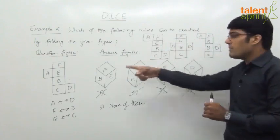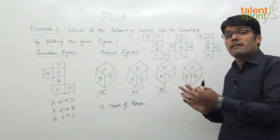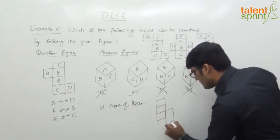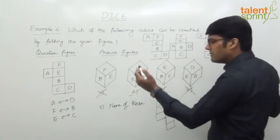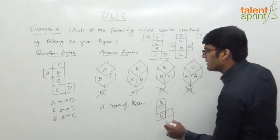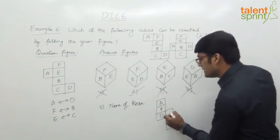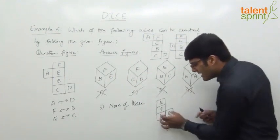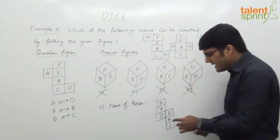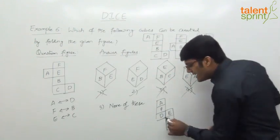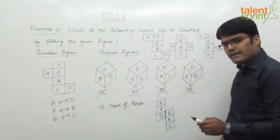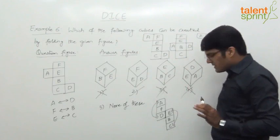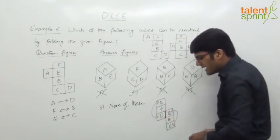There is one more form of the open figure that is slightly different — where there are no extensions. In this form, arranged as A, D in one line and F, B in another with E and C, you cannot use the extension rule. Instead, within each straight line, alternate ones are opposite: A and D are opposite, E and C are opposite. What is left out is F and B — the center of the first line and the center of the second line — F and B are also opposite.